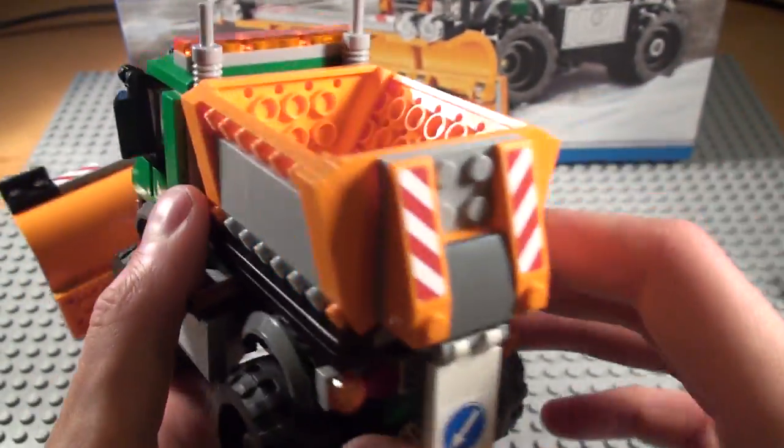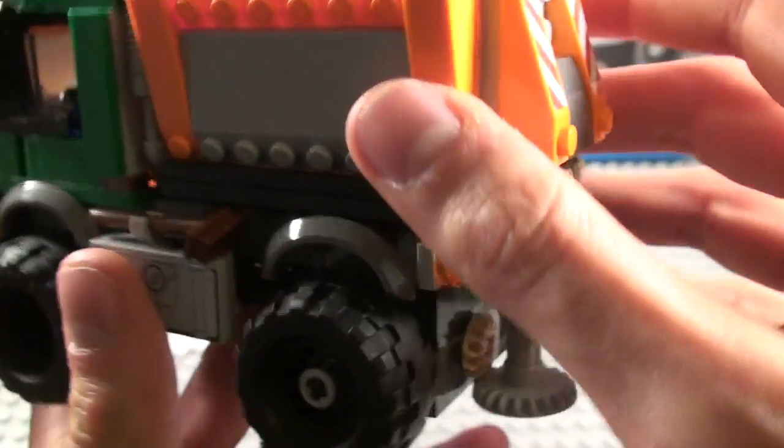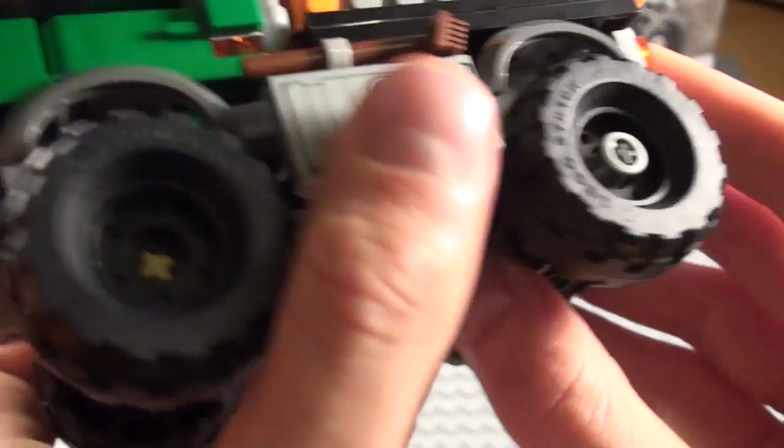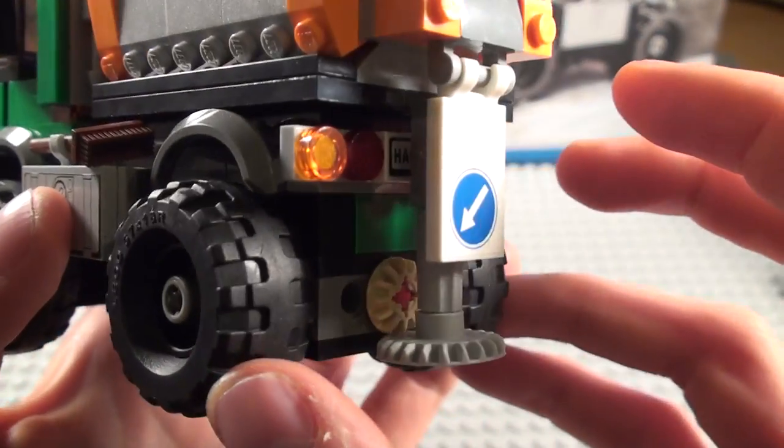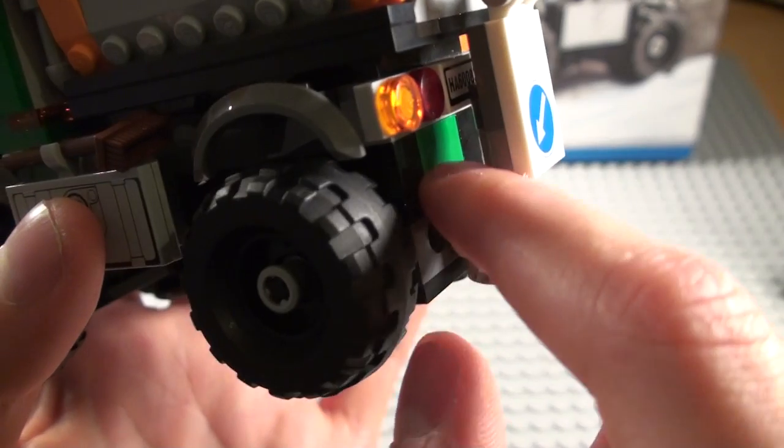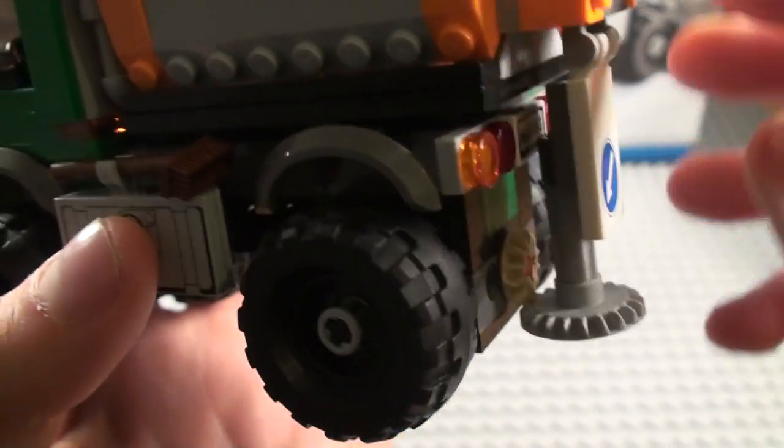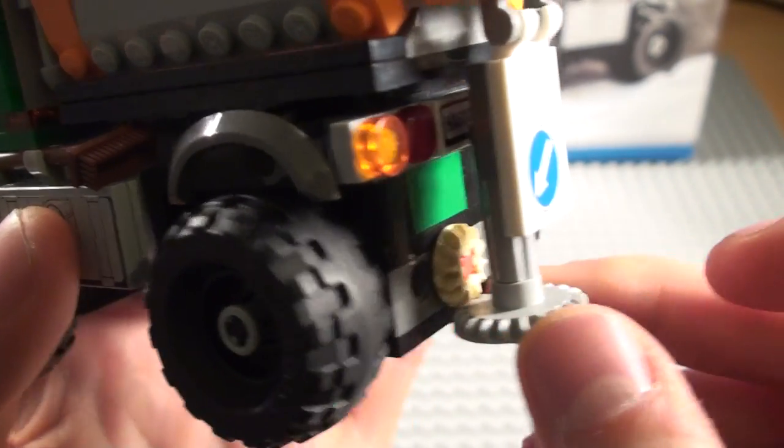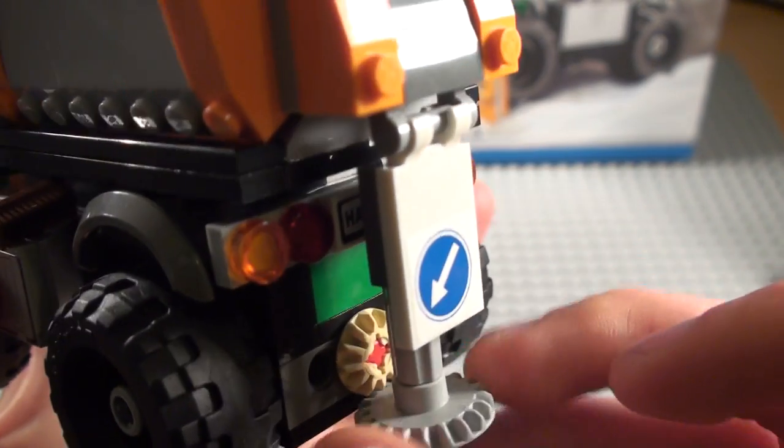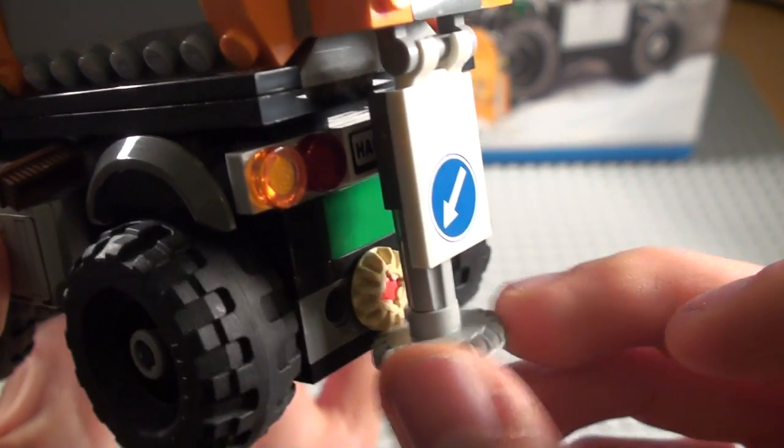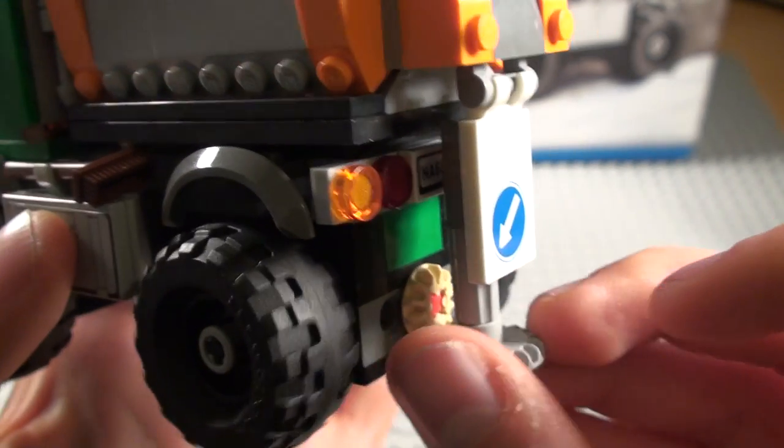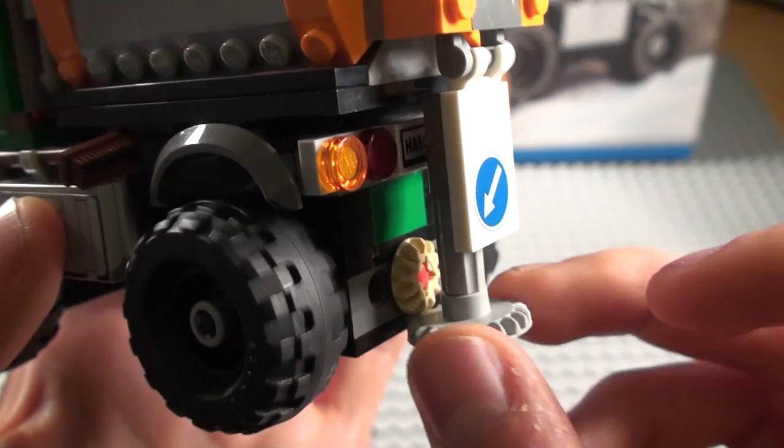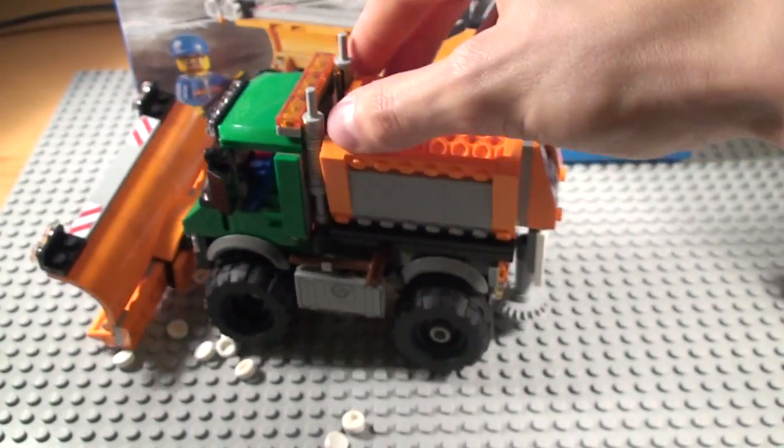And then the main feature of the truck is that there is a mechanism inside. You can see it here in the rear wheels. And as the truck moves, it moves this piece here, which causes the actual dispenser to dispense the grit, I guess. So that's a really cool feature.